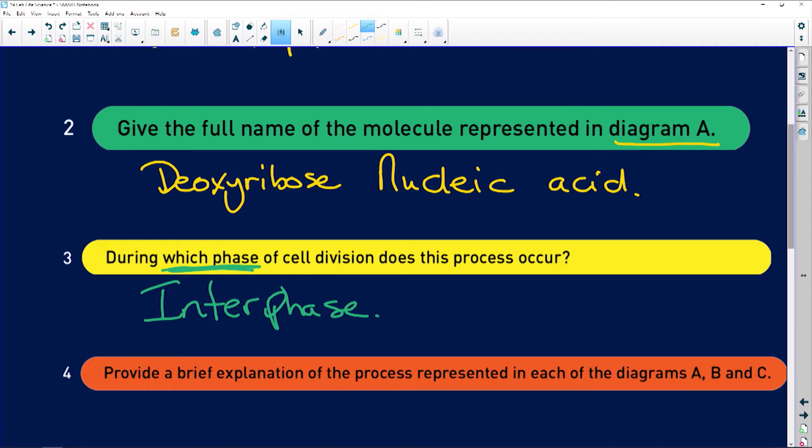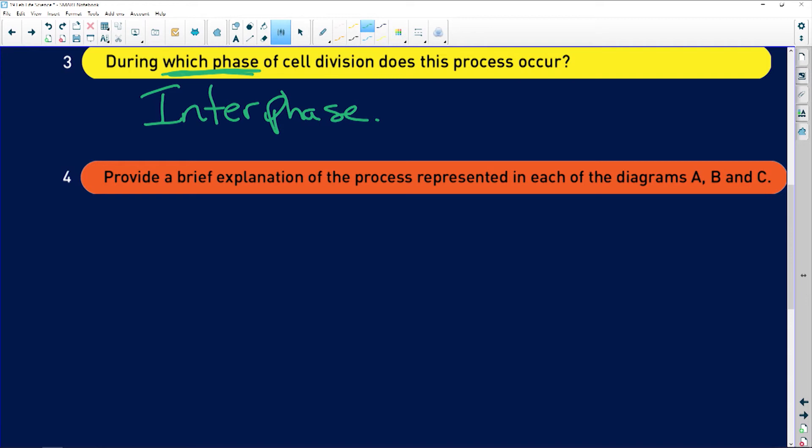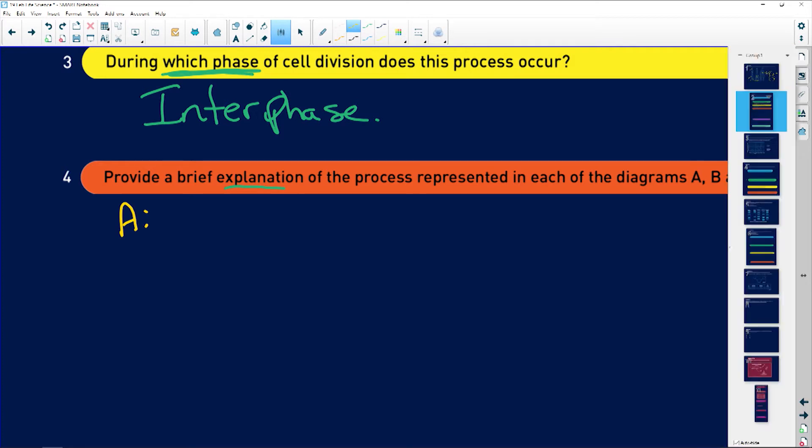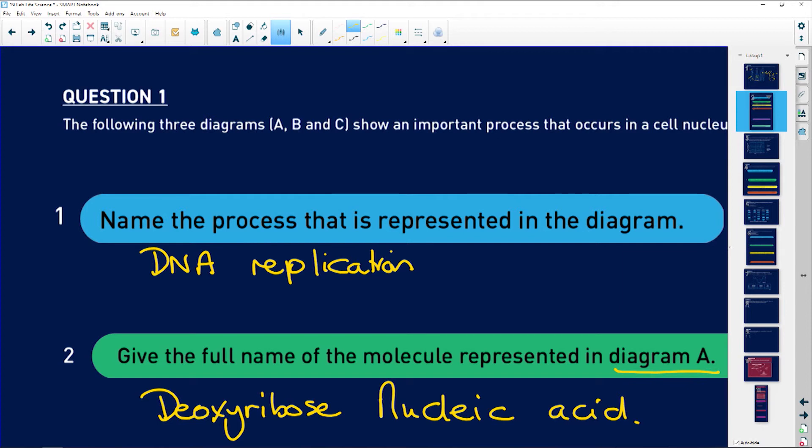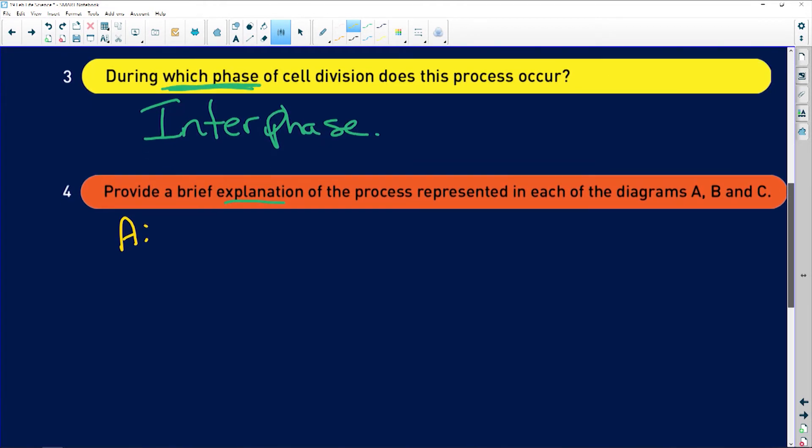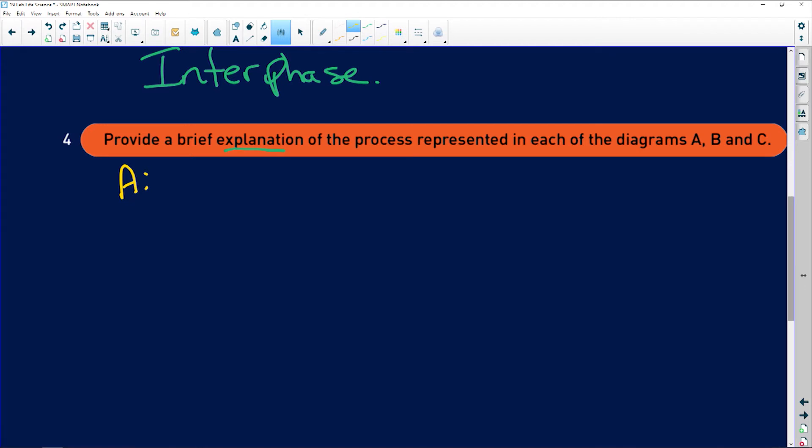Now provide a brief explanation of the process represented in diagrams A, B, and C. Let's go back and look at diagram A. During A we have the double helix DNA molecule. The first thing it's going to do is unspiral.